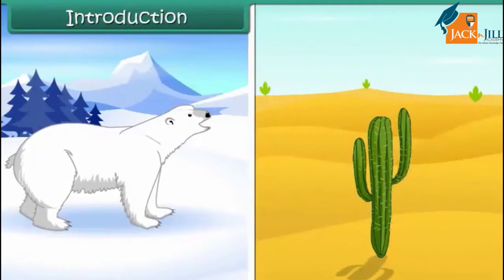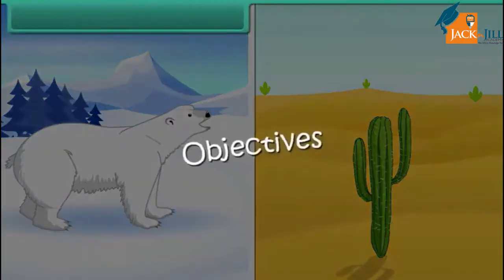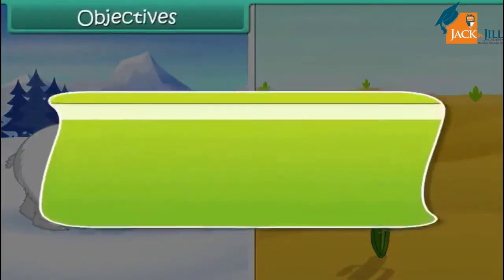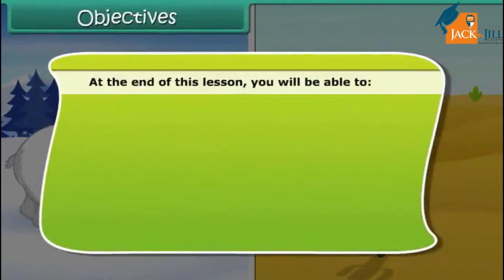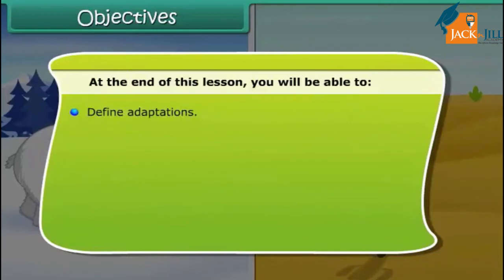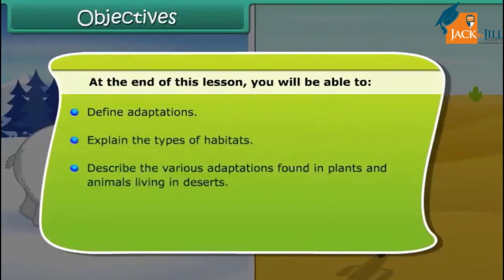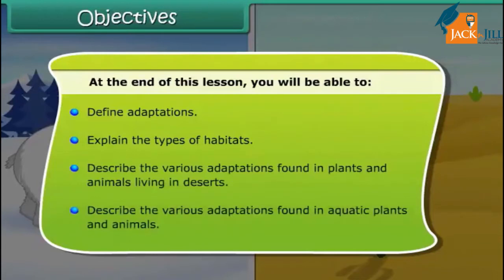In this lesson, we are going to learn how different plants and animals adapt according to their habitats. At the end of this lesson, you will be able to define adaptations, explain the types of habitats, and describe the various adaptations found in plants and animals living in deserts and aquatic environments.